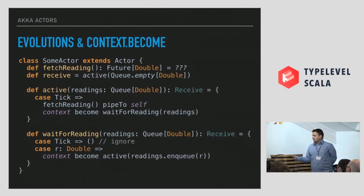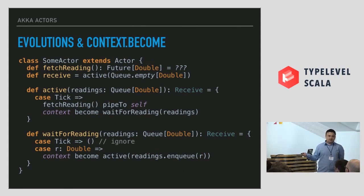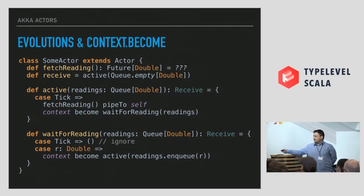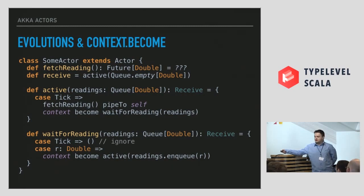I hate variables and mutable data structures. The way to work with actors — the way Erlang does it — is to evolve the receive function. We can also do that with Akka using `context.become`. Instead of having mutable state, we can have special receive functions and evolve them with `context.become`. In this example, `readings` is no longer mutable — it's passed as an argument to our receive function. We simply evolve it when we've got a new state. This protects you: if you capture readings in a future, at least you won't be able to modify it since it's immutable.